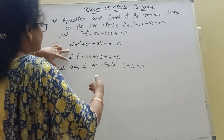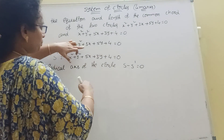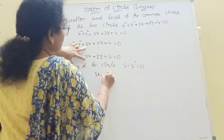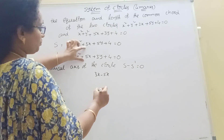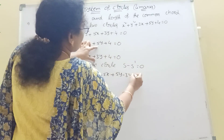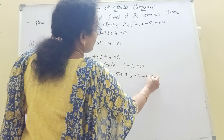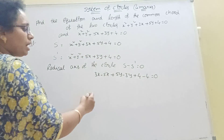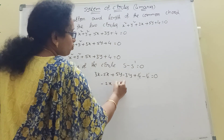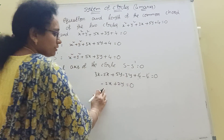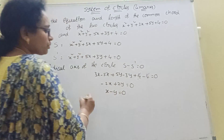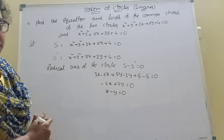Now, S minus S dash equal to 0: 3x minus 5x, plus 5y minus 3y, plus 4 minus 4 cancels. So we get 3x minus 5x = minus 2x, and 5y minus 3y = 2y. This simplifies, and the final equation we arrive at is x minus y equal to 0.